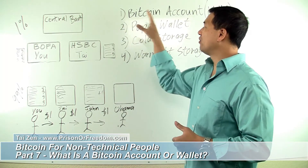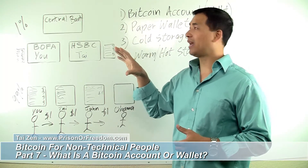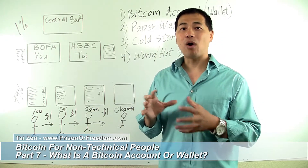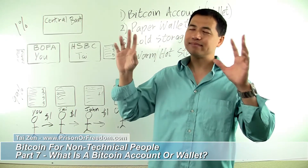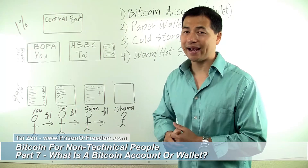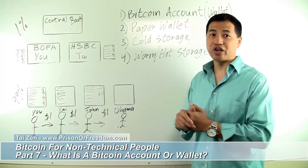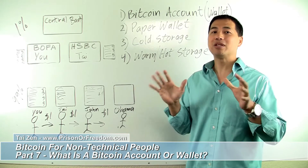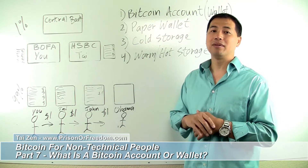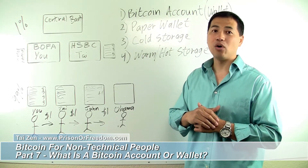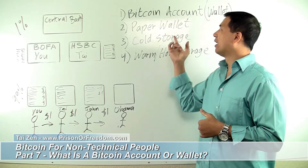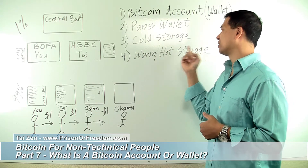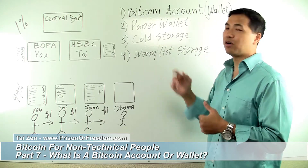There are different types of wallets, and the way that you store them is for security reasons, because you are the only one responsible for the Bitcoin that you hold in your account. There's what's called a paper wallet, there's cold storage, and there's warm and hot storage. Let me go over those real quick.